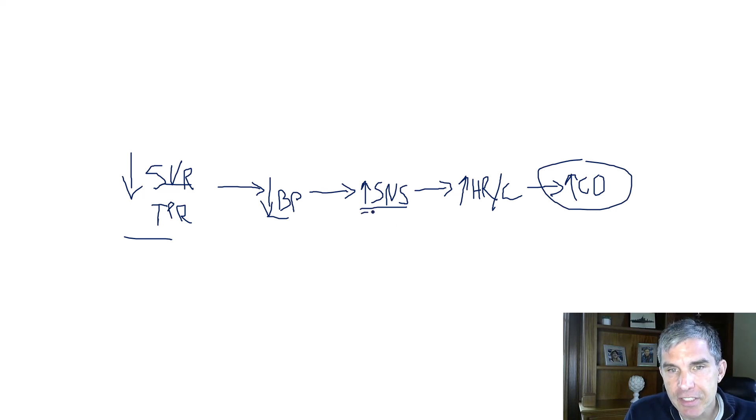Now, in addition to activating the sympathetic nervous system, the low blood pressure is also going to increase activity of the renin-angiotensin-aldosterone system. The kidneys are going to sense the low blood pressure and release more renin.